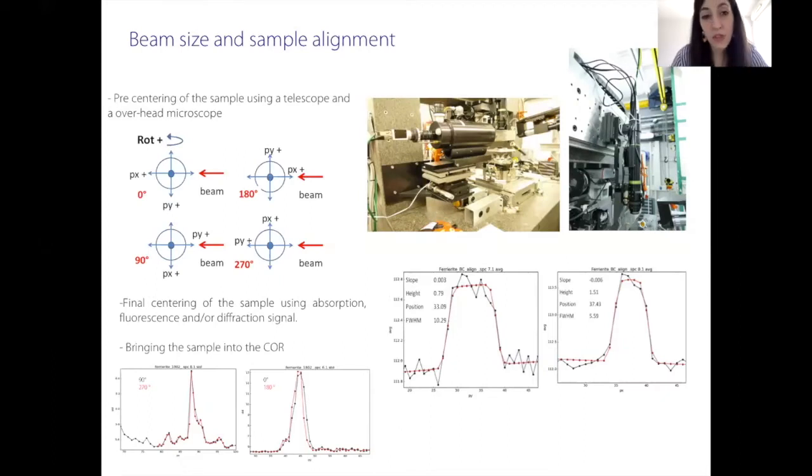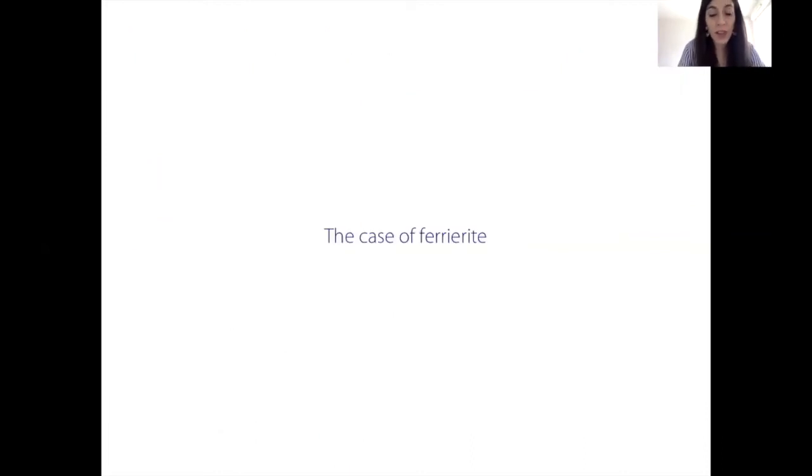Before performing any single crystal or diffraction experiment, we want to be sure our sample is well aligned in the beam. For this reason we use a telescope or overhead microscope and perform final centering of the sample after having optically aligned it by using the absorption signal, fluorescence, or diffraction signal. Of course we want to be sure the sample is in the center of rotation.